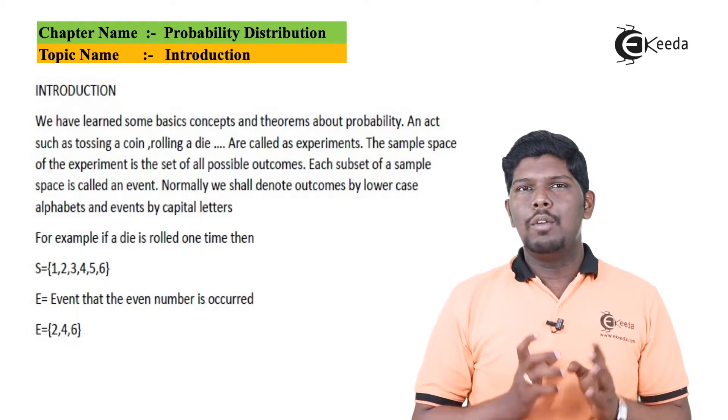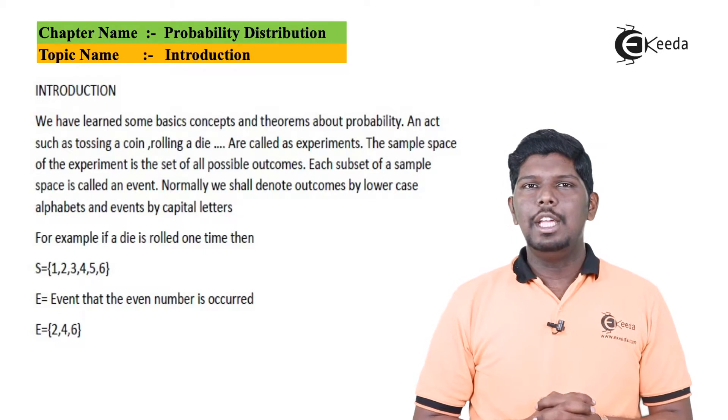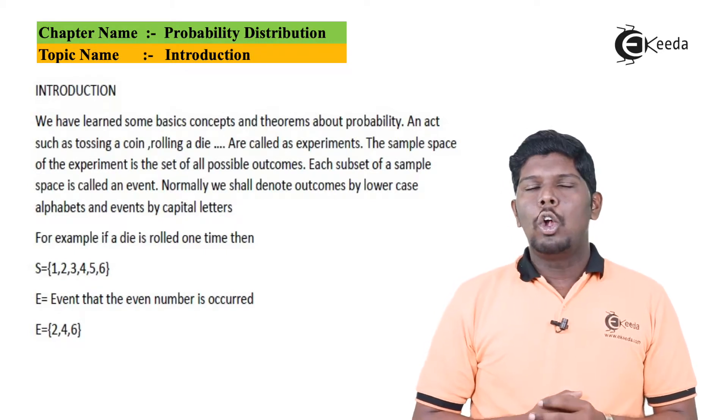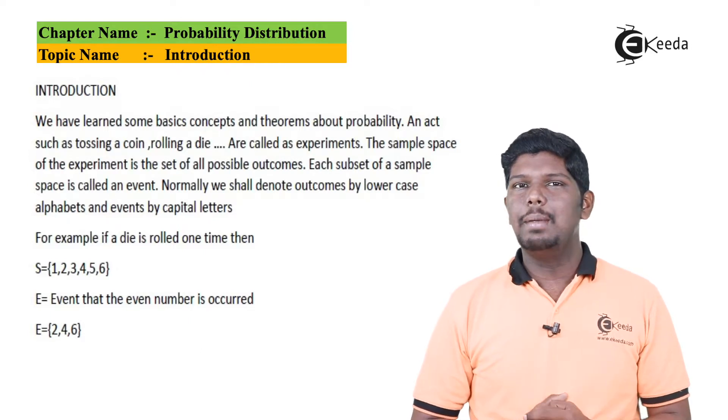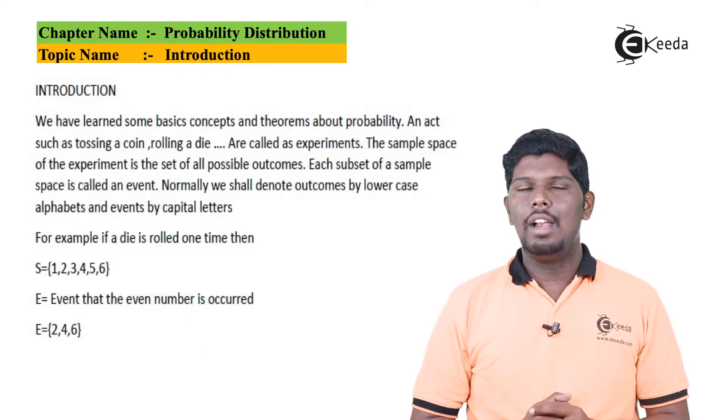So performing such experiments, whatever outcome we get is called as a sample space. Normally, the outcomes are denoted by lowercase alphabets while the sets are represented by capital alphabets.